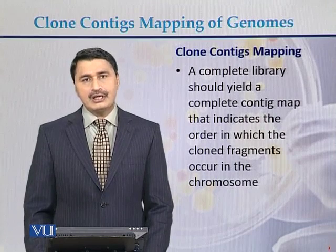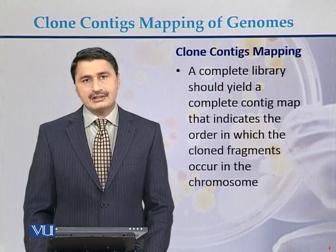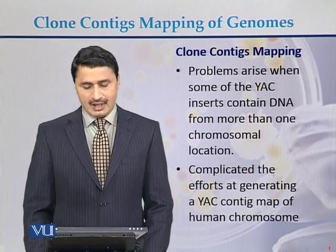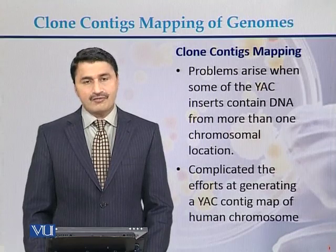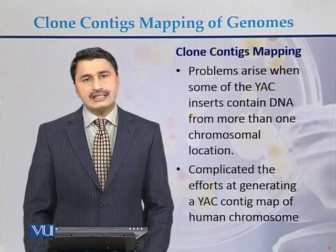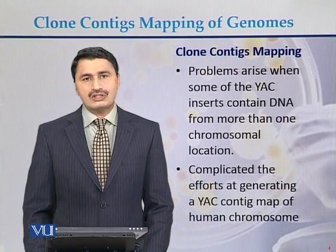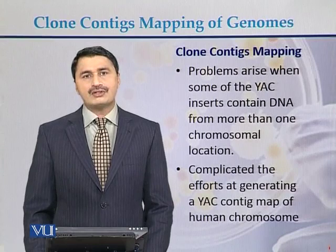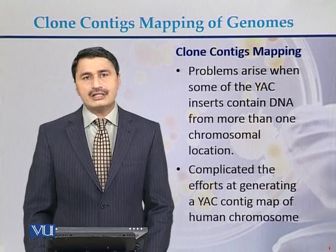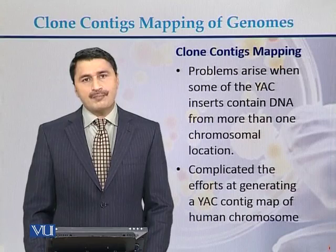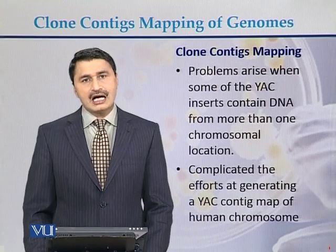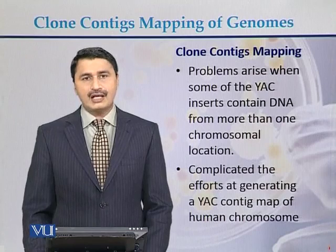A complete library of YACs usually represents the complete set of YACs in a contig map. Problems arise when some of the YACs contain DNA from more than one chromosomal location. Because yeast artificial chromosomes can accommodate larger fragments of DNA, sometimes more than one fragment of the chromosome inserts into a single YAC. This has complicated efforts at generating a yeast artificial contig map of the human chromosomes.